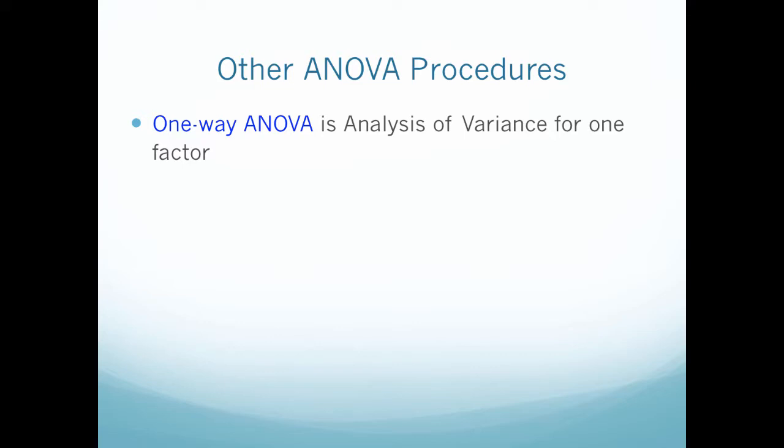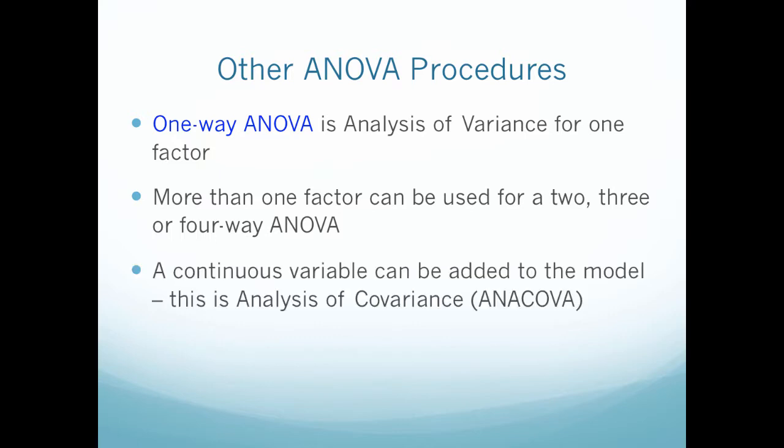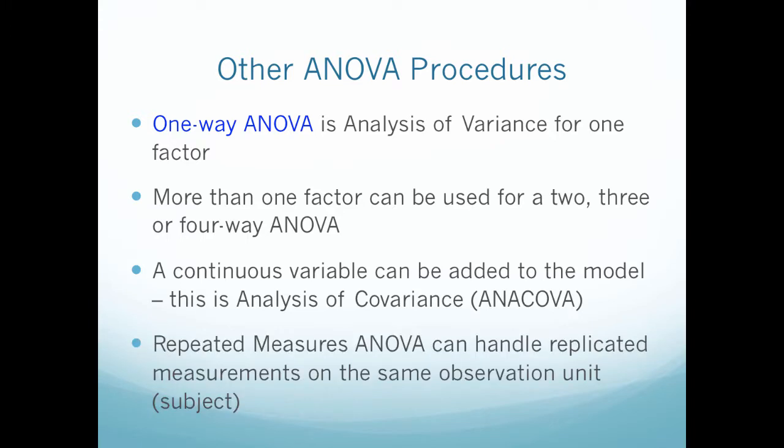So let's talk briefly about the ANOVA. We've talked about this in a previous video, but we have the one-way ANOVA, which is the analysis of variance for one factor. We have more than one factor that can be used for a two-, three-, or four-way ANOVA, and we're going to be talking about those in the next chapter. Those are called factorial experiments. And then we have a continuous variable that can be added to the model, which is called an ANACOVA, which is analysis of covariance.